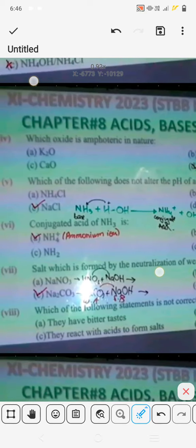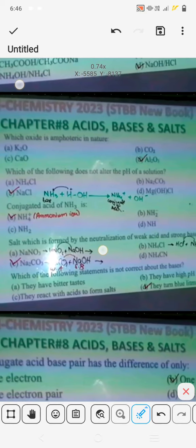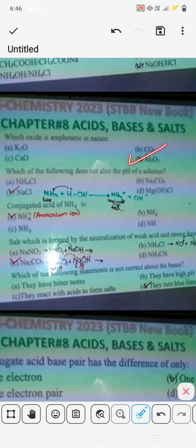Then we have another question: which oxide is amphoteric in nature? Aluminum oxide is amphoteric in nature. I have told that aluminum or zinc containing compounds are amphoteric.